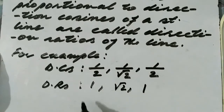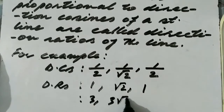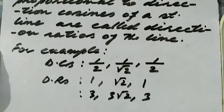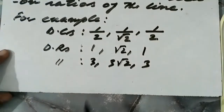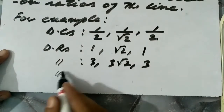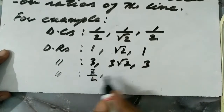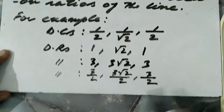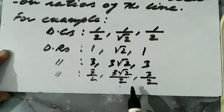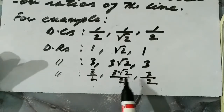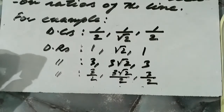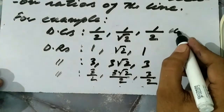We may also multiply these three numbers by any other number, say 3, giving 3√2 and 3. These are also direction ratios because these three numbers have the same proportion as the direction cosines. Similarly, we may multiply or divide by any number and the resulting numbers are still direction ratios, since any three numbers with the same proportion as the direction cosines are called direction ratios.